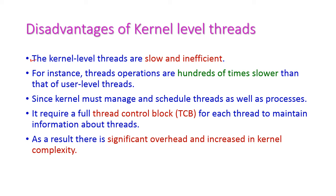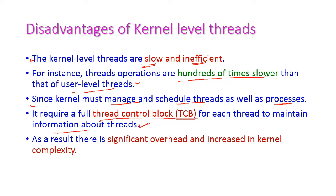The disadvantages of kernel level threads: They are slow and inefficient. Kernel level thread operations are 100 times slower than user level threads because the kernel must manage and schedule both threads and processes. For each thread, the kernel must maintain a Thread Control Block (TCB). This results in significant overhead and increased kernel complexity, as the kernel needs to maintain both thread control blocks and process control blocks.